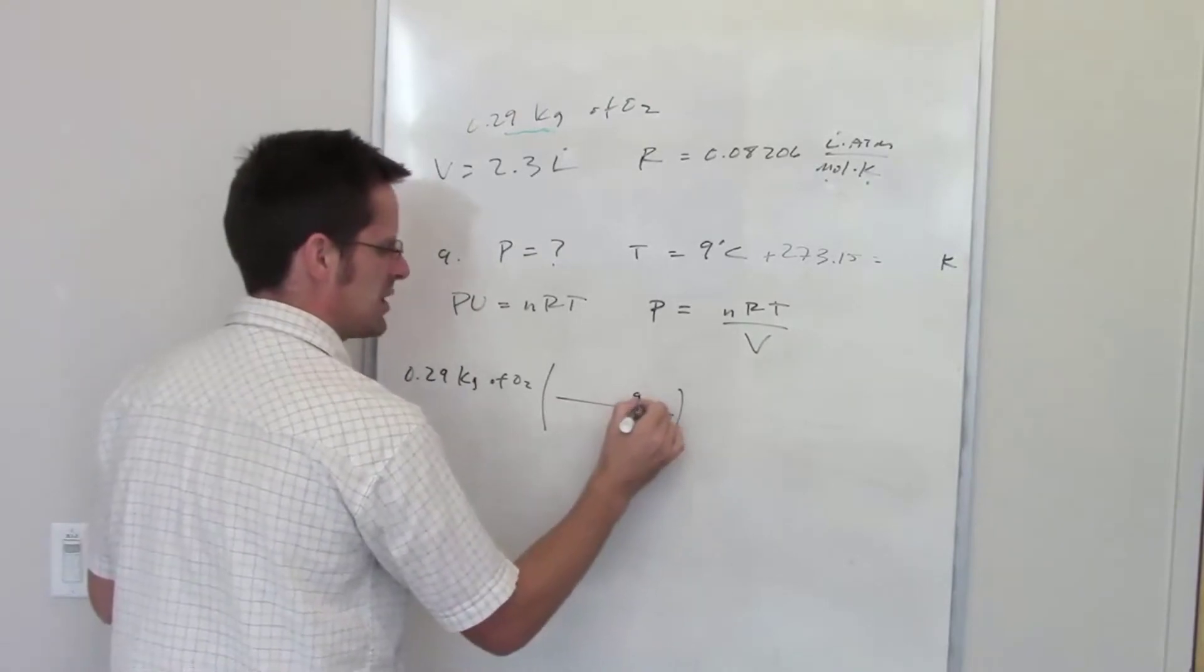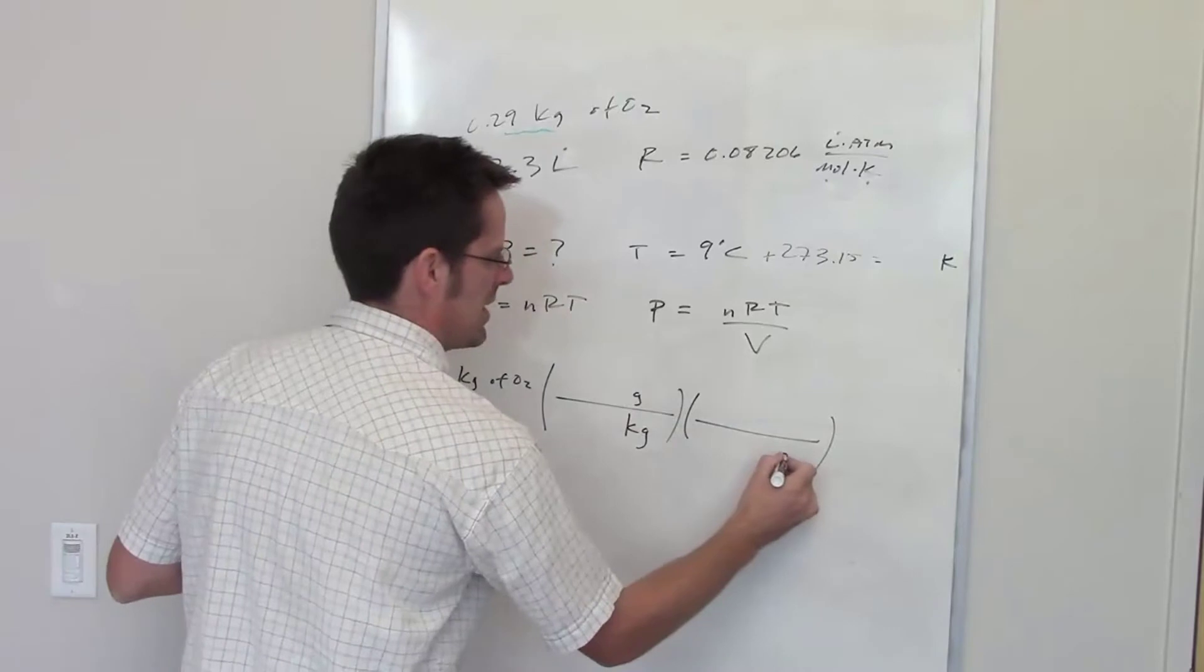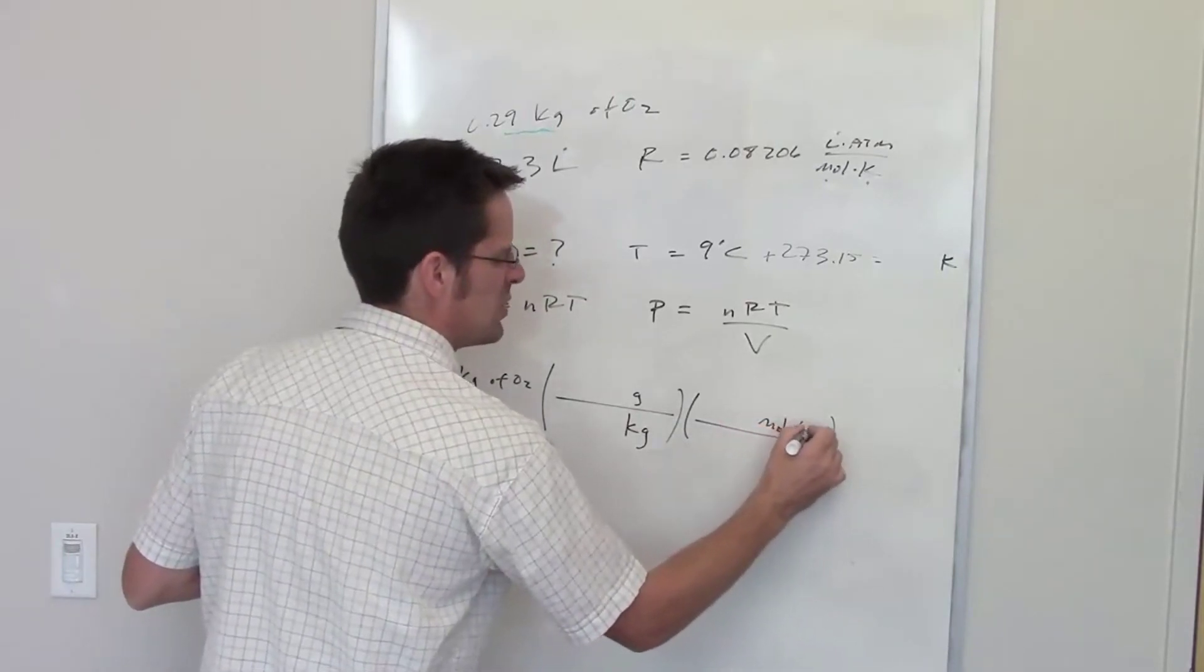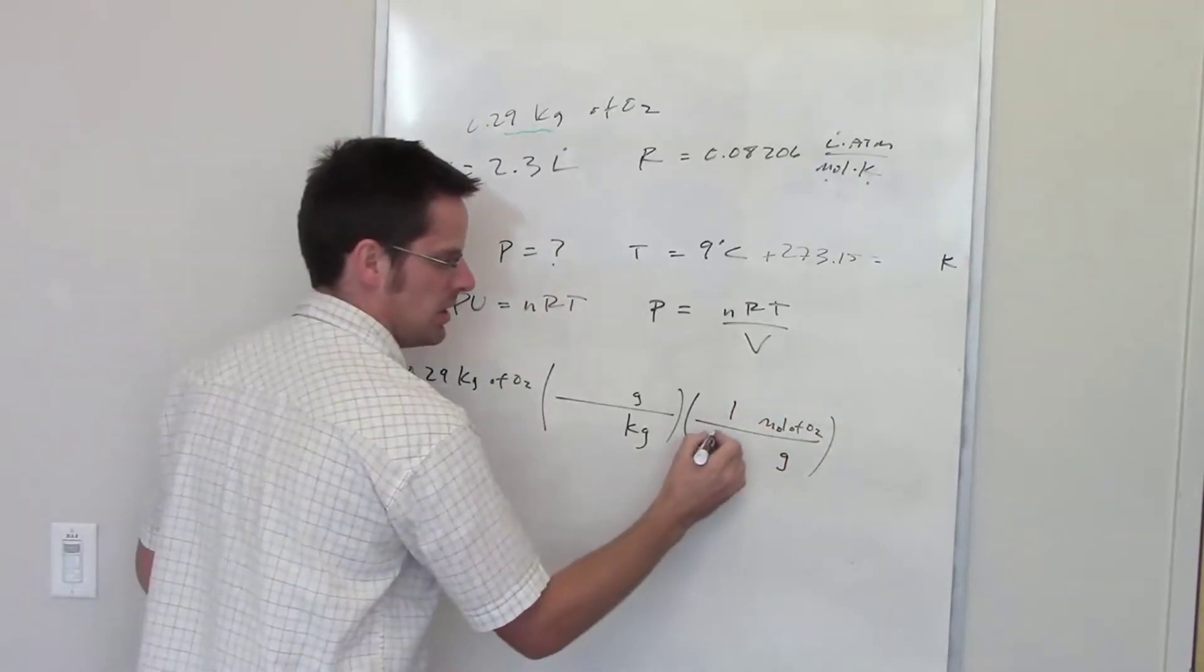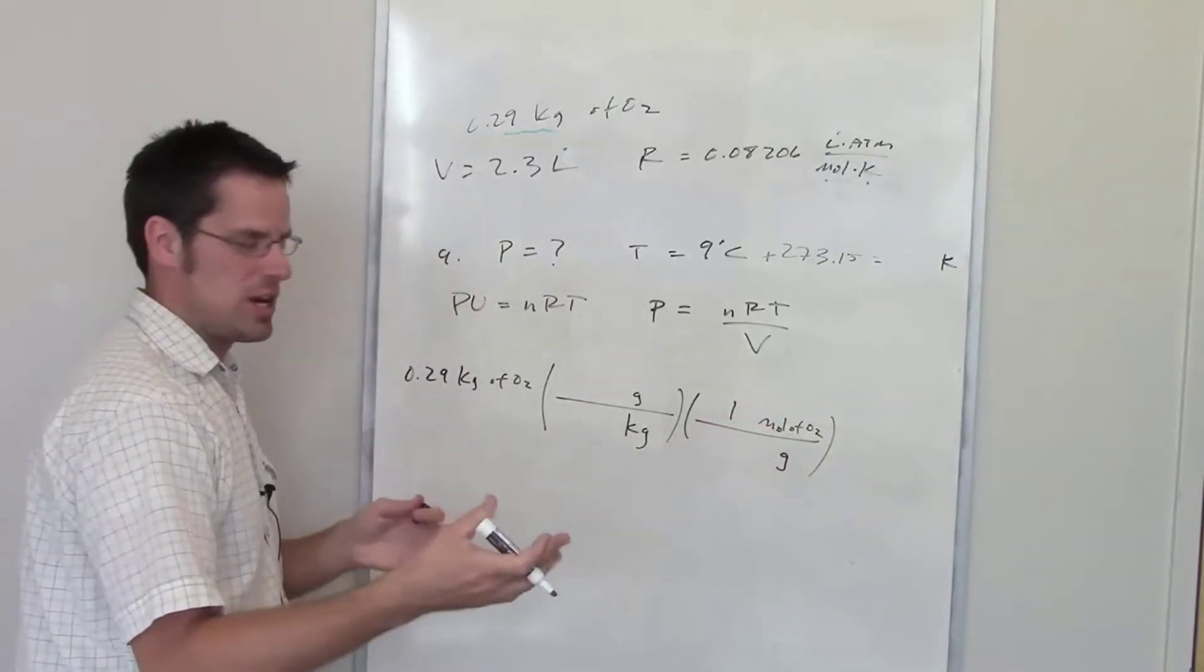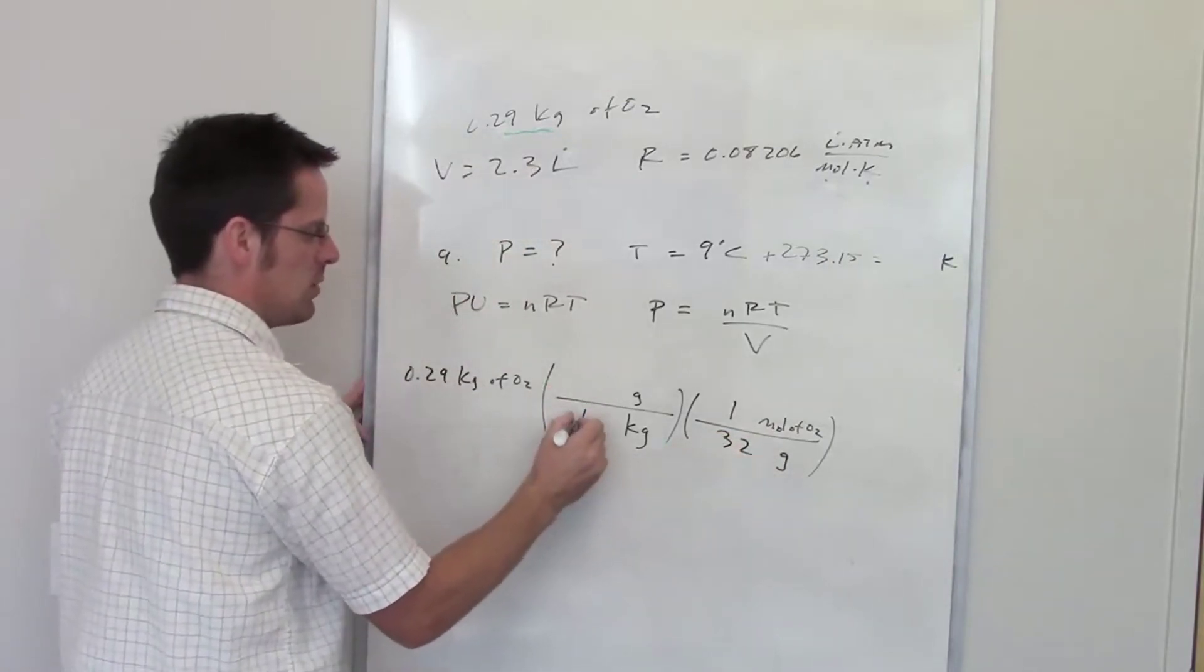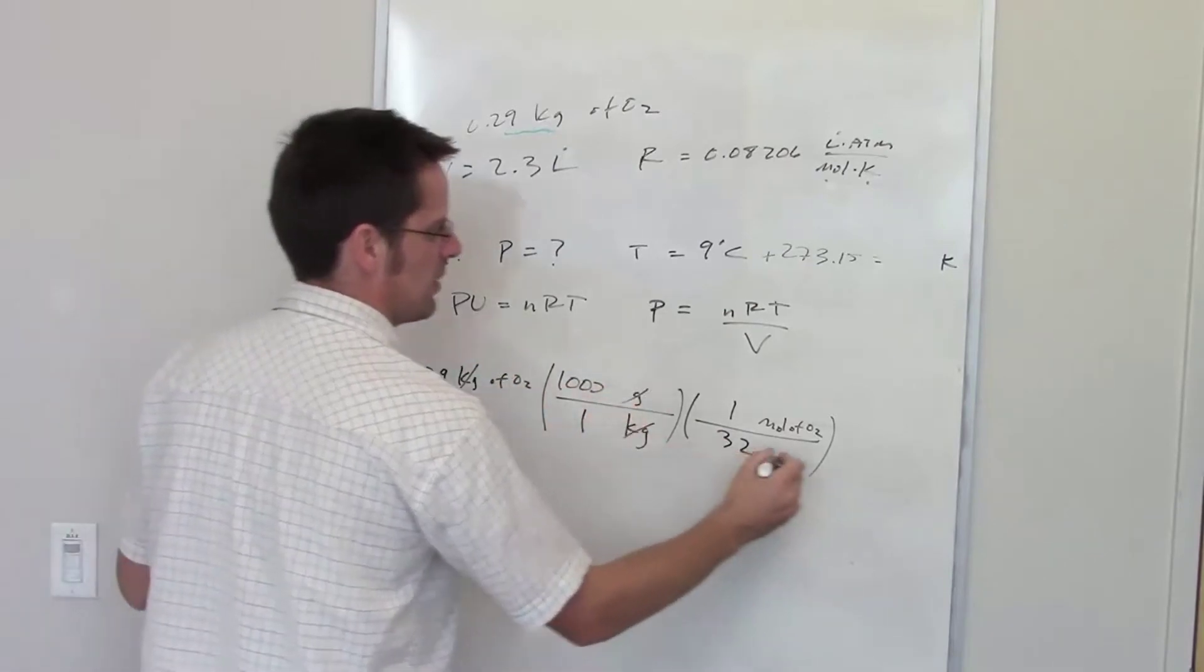I want to cancel kilograms. I can put grams on top so that I can eventually go to the molecular weight of O2. I can throw grams in the denominator and put moles in the numerator. One mole of O2 weighs how many grams? Well, each individual oxygen atom is 16, so that should be 32.